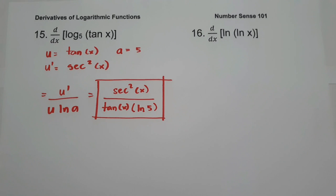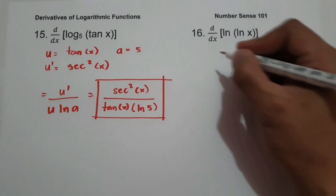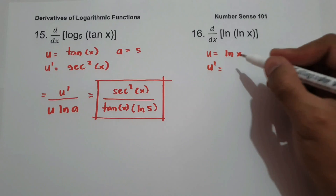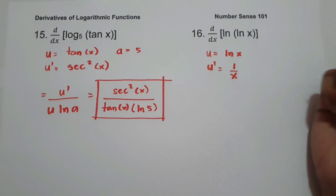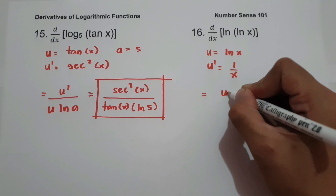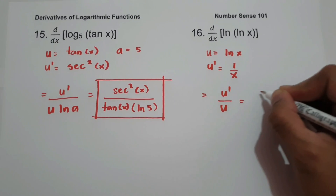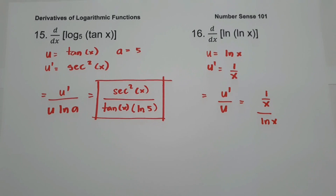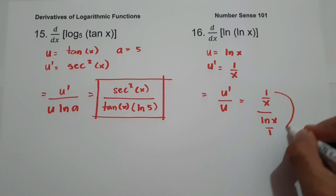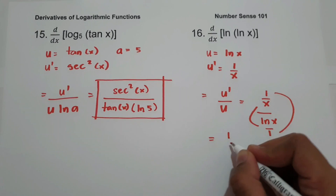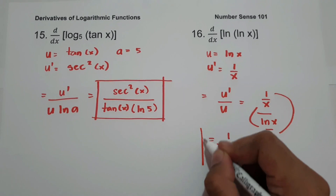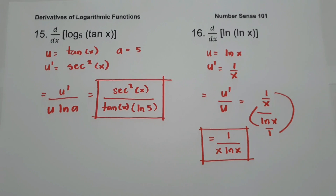Number sixteen: derivative of ln(ln x). Let u = ln x, so u' = 1/x. Applying u' over u gives (1/x) over ln x. Simplifying by multiplying, the final answer is 1 over (x · ln x). I hope you learned from this video. Thank you so much for watching, and God bless us all.